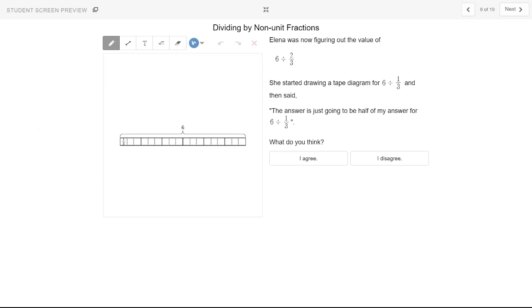Elena was now figuring out the value of six divided by two-thirds. She started drawing a tape diagram for six divided by one-third and then said the answer is just going to be half of my answer for six divided by one-third.